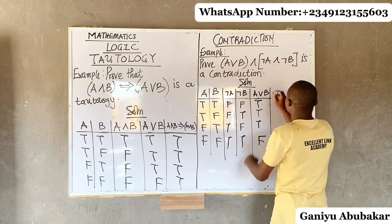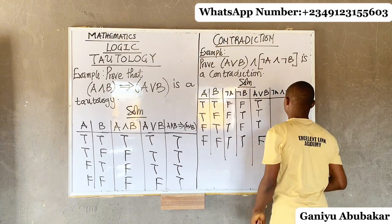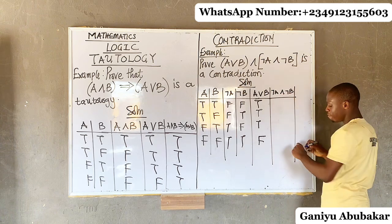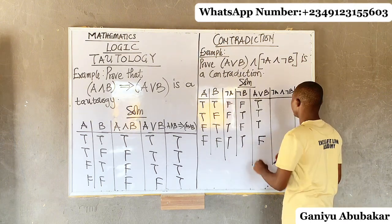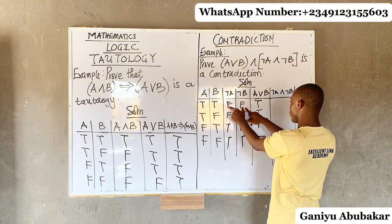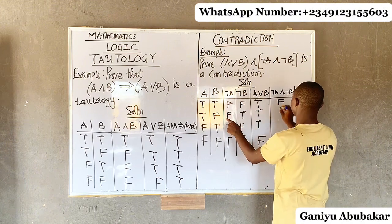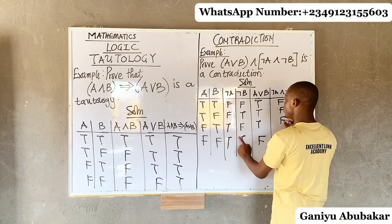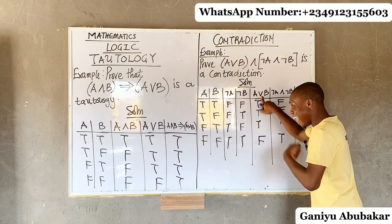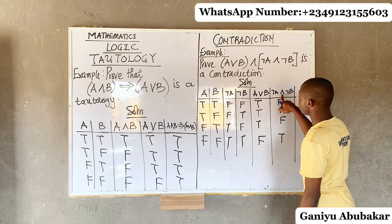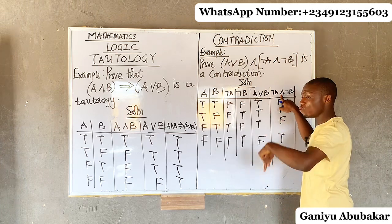Now let's get negation of A AND negation of B. For AND, if it contains at least one false the answer is false. So: false AND false — there's a false, becomes false; false AND true — a false exists, becomes false; true AND false — a false exists, becomes false; true AND true — no false, becomes true. Remember: for OR at least one true; for AND at least one false.